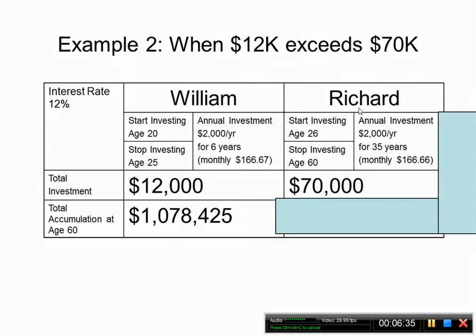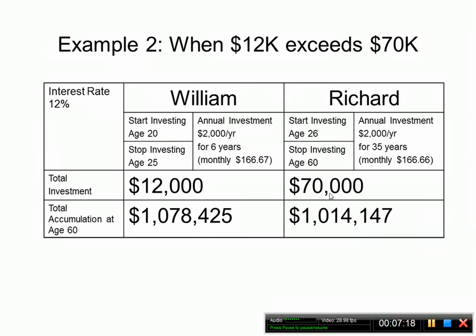Richard did not start as early as William. He started investing at age twenty-six — right after William finished — and continued investing through age sixty, a total of thirty-five years, also at a twelve percent interest rate with annual investments of $2,000. His total invested was $70,000. At age sixty, Richard had $1,014,000. This illustrates that $12,000 invested early can actually exceed $70,000 invested later, depending on the timing.